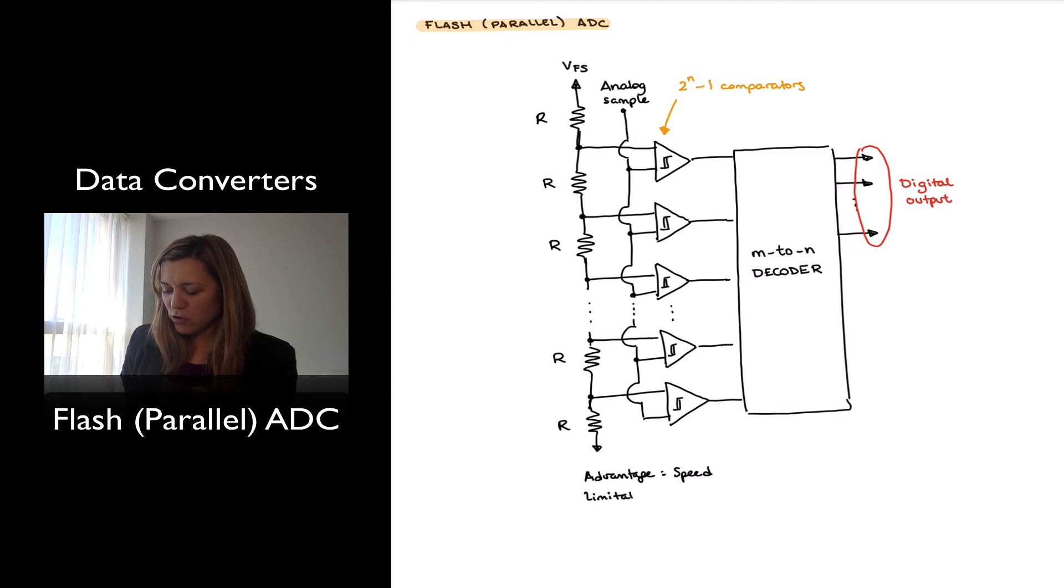The main limitation is also pretty obvious. It's the complexity of the circuit, or more than the complexity, I'm referring to the number of comparators that is required. You can see it will require 2 to the N minus 1 comparators, so as the value of N goes up, the number of comparators needed goes up exponentially.